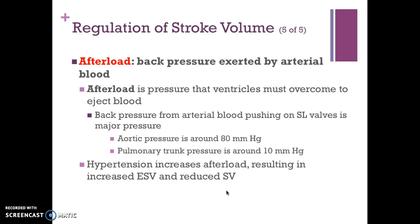The last way the body regulates stroke volume is by affecting afterload. Afterload is the pressure that the ventricles must overcome to eject blood. Aortic pressure is around 80 mmHg and pulmonary trunk pressure is about 10 mmHg. Hypertension increases afterload, resulting in increased end-systolic volume and reduced stroke volume.